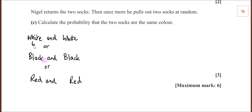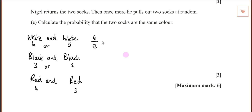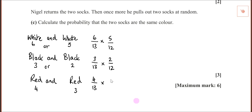There were six white socks — if I pull the first one there'd only be five left. Black: there are three, but there would only be two. Red is four, then there would only be three. So we've got six from thirteen times five from twelve, or three from thirteen times two from twelve, or four from thirteen times three from twelve. Each denominator is one hundred and fifty-six.